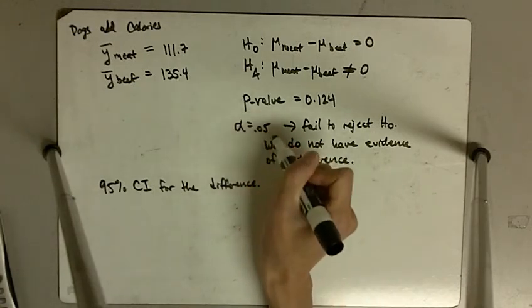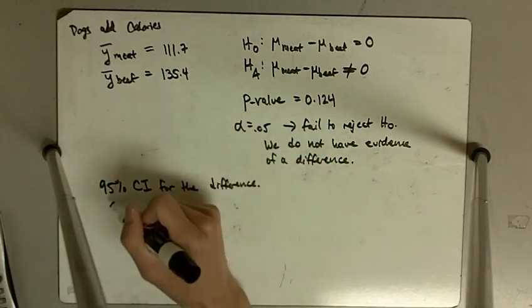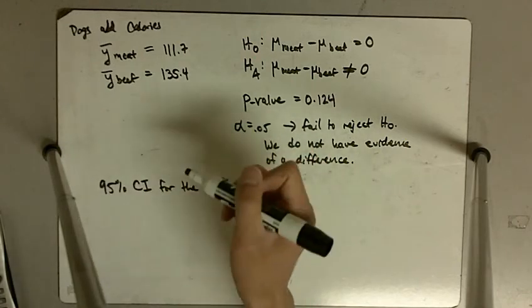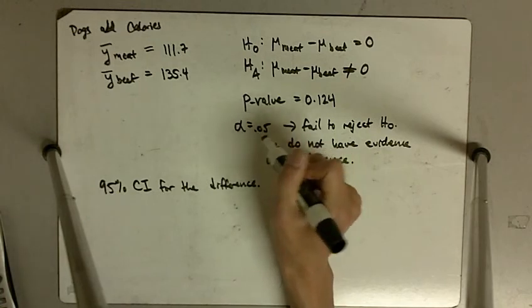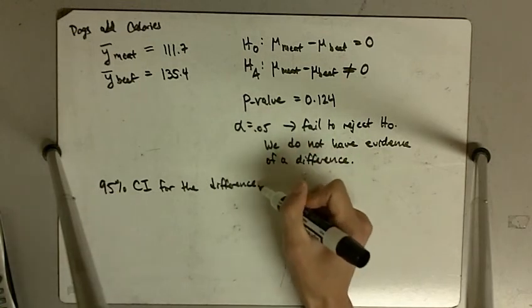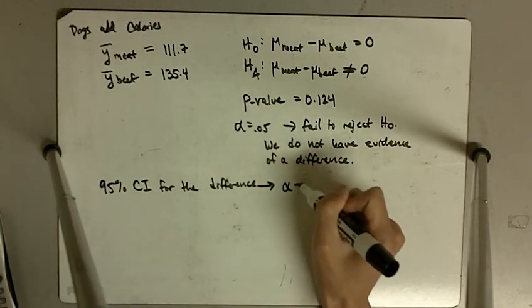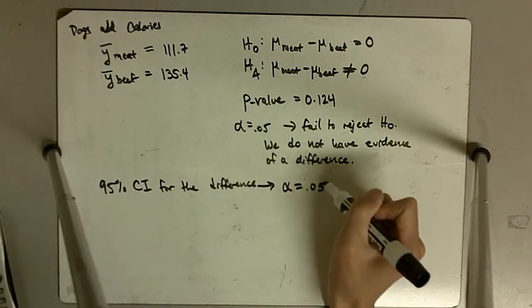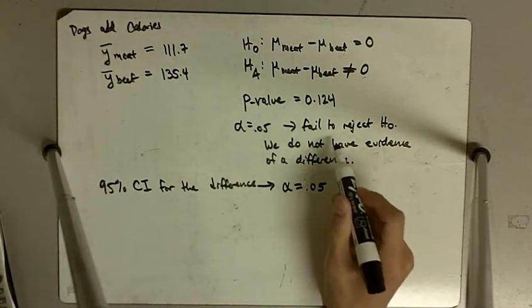If we made a 95% confidence interval for the difference, that means we're essentially testing at the same significance level. We've got a 5% level because 95% is 5% short of 100. Our significance level is 5%, so this is the equivalent of having alpha equal to 0.05.